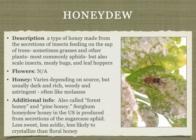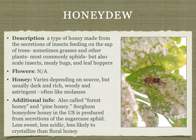Honeydew is a group of honeys made from secretions of insects — most commonly aphids, but also scale insects, mealybugs, and leafhoppers — that feed on tree sap. Honeybees gather these secretions and make them into honey. Usually dark, rich, woody, astringent, and sometimes like molasses, it's also called forest honey, pine honey, or oak honey. It tends to be less sweet, less acidic, higher in mineral content, and less likely to crystallize than floral honey. In the US there's a honeydew honey made from secretions of the sugarcane aphid feeding on sorghum — very similar to sorghum molasses and a really lovely honey.